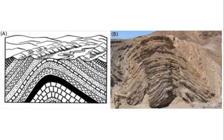An anticline is a fold that arches upward. The rocks dip away from the center of the fold. The oldest rocks are found at the center of an anticline. The youngest rocks are draped over them at the top of the structure. When the upward folding rocks form a circular structure, that structure is called a dome. If the top of the dome is eroded off, the oldest rocks are exposed at the center.